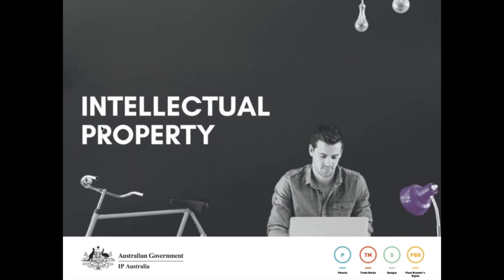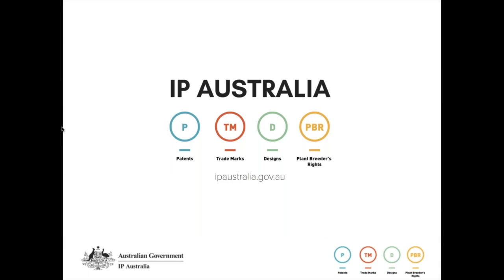Today's session is targeted at small businesses and those who are really new to IP — it probably won't be as helpful for anyone who's already applied for an IP right or who's an attorney. IP Australia is the federal government agency based predominantly in Canberra, with offices around the country. Our role is to administer the IP rights system in Australia — we take applications for patents, trademarks, designs, and plant breeders rights, assess those applications against the law, and if they meet the test, we grant ownership of that particular IP right.